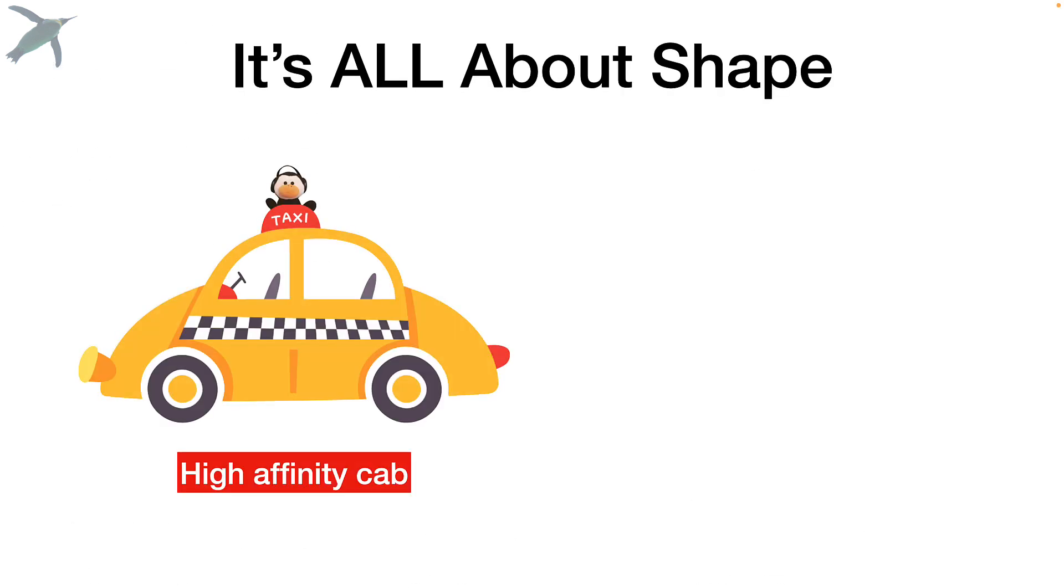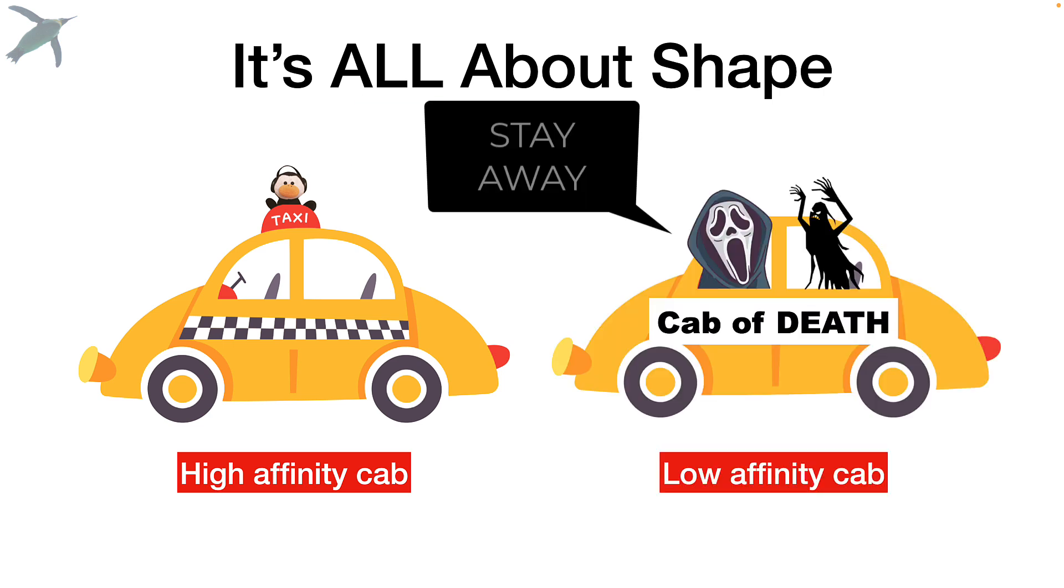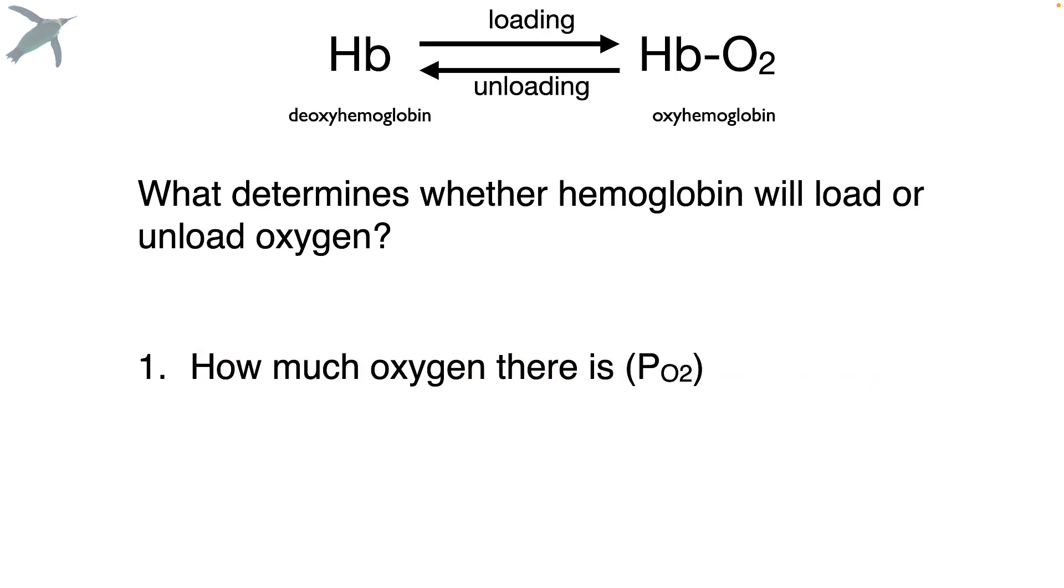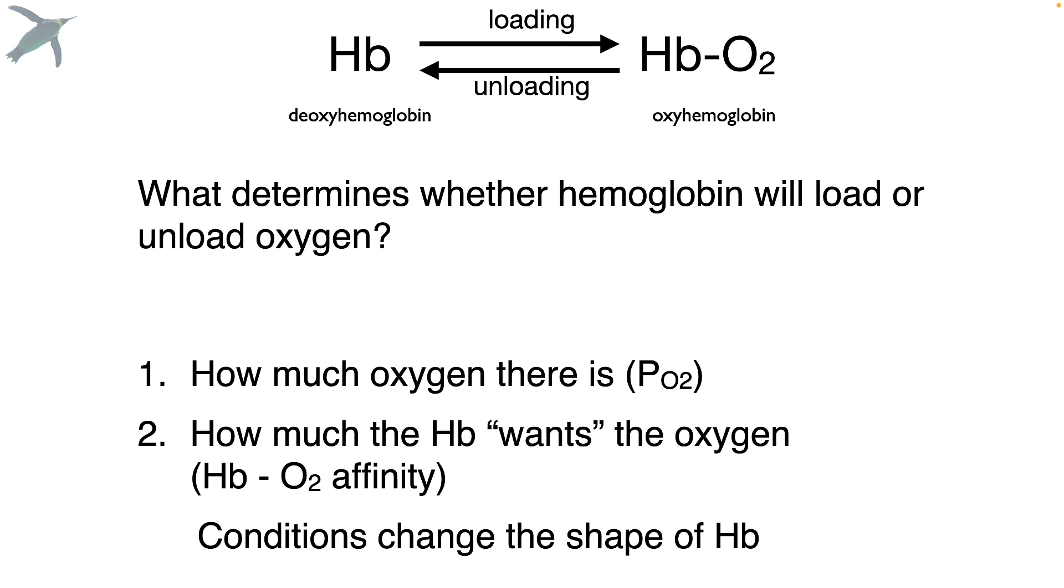The body conditions will affect the shape of the hemoglobin or the taxi. Let's call this a high affinity cab, meaning oxygen wants to bind here. And this is a low affinity cab. I mean, seriously, would you get in that? Let's make it more science-y now. What determines what direction this loading and unloading reaction goes? First, how much oxygen there is. We are going to use PO2, the partial pressure of oxygen, to describe that. And second is how much the hemoglobin wants the oxygen. That is hemoglobin oxygen affinity. And that is really going to be the key because the conditions around the hemoglobin will change its shape.